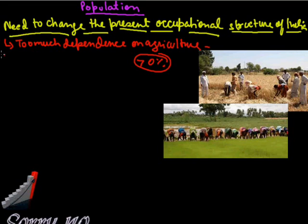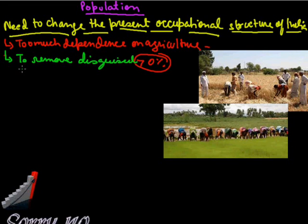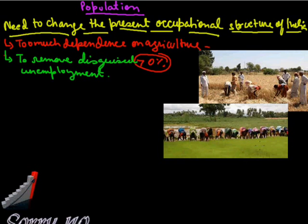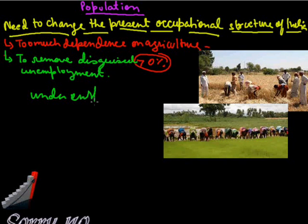We have to change this so that maximum population will depend on the secondary and tertiary sector instead of agriculture. Because of this, we also see a lot of disguised unemployment in India. So many people are doing work on a small piece of land, and this work can easily be done by just 4, 5, or 6 people. The number of people is more than what the land needs. This is known as underemployment or disguised unemployment, also known as hidden unemployment.